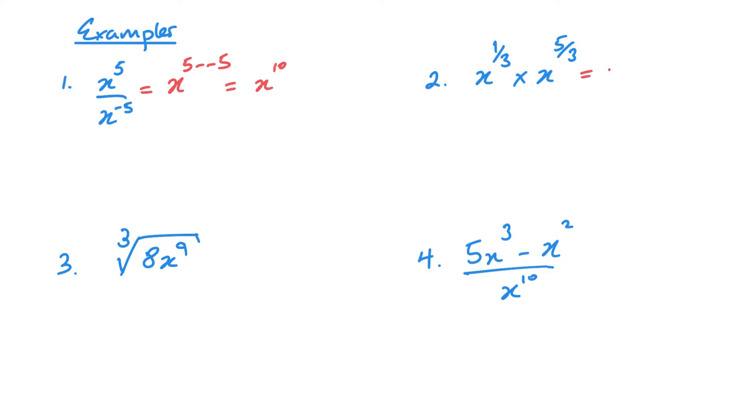And this one, we've got x to the 1 third plus 5 thirds, so it's going to be x to the 6 thirds, which is the same as x squared. So two very straightforward questions to start off.